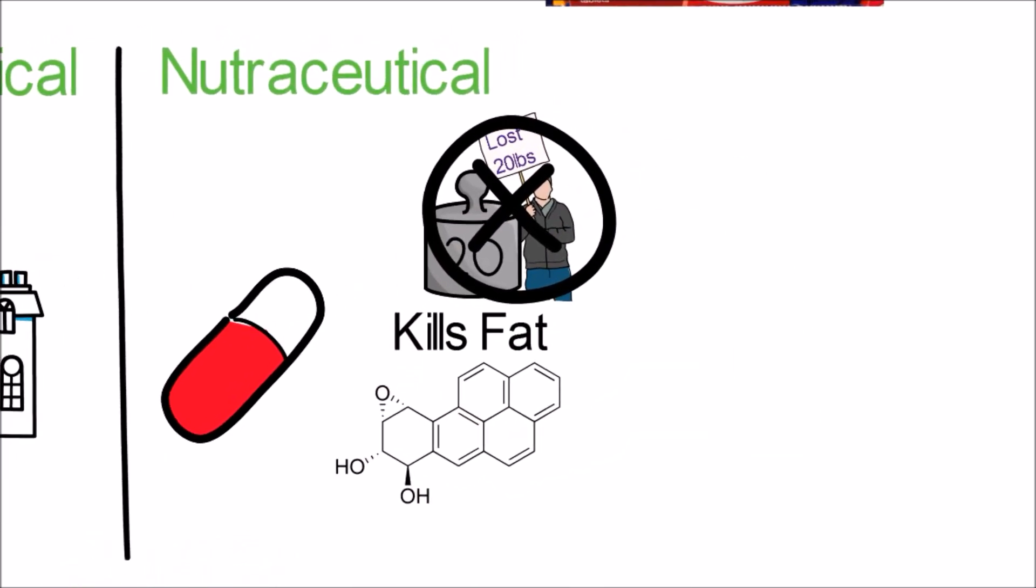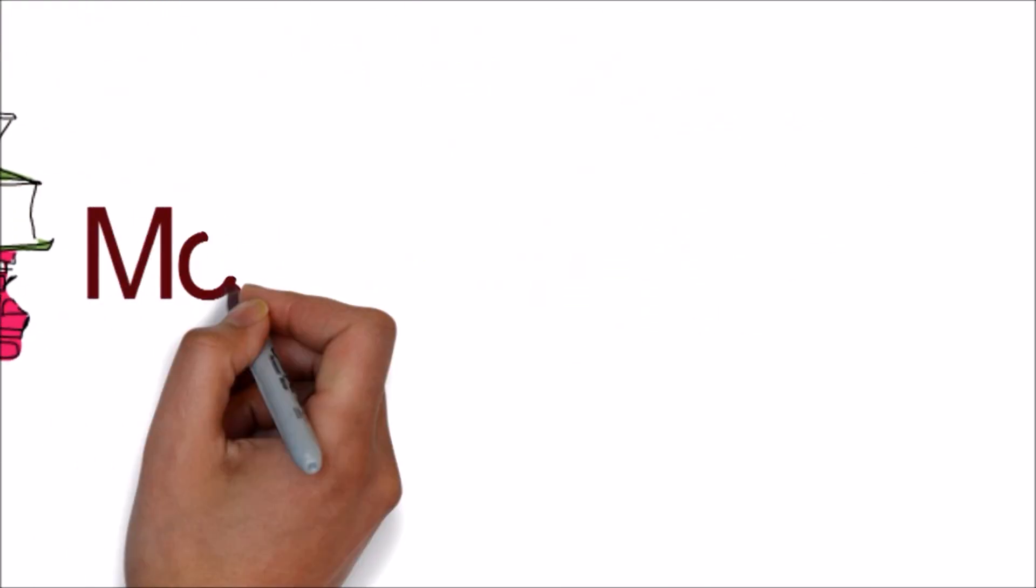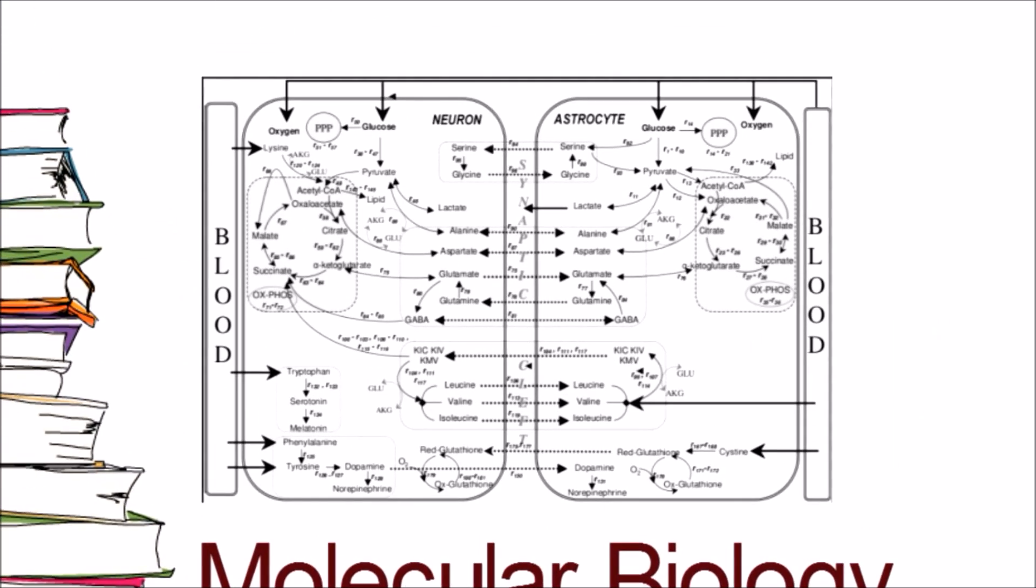So you have two options. One is really easy and the other is really hard. Option one: get a PhD in molecular biology, study the metabolic pathway, and analyze the scientific literature and draw your own conclusions.